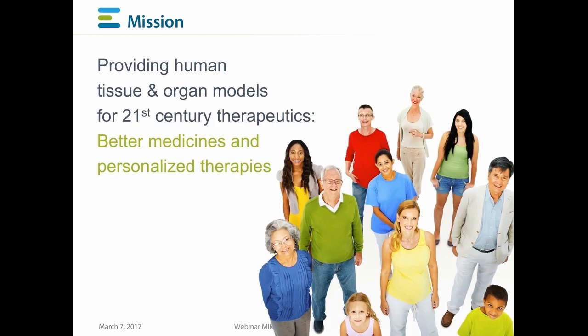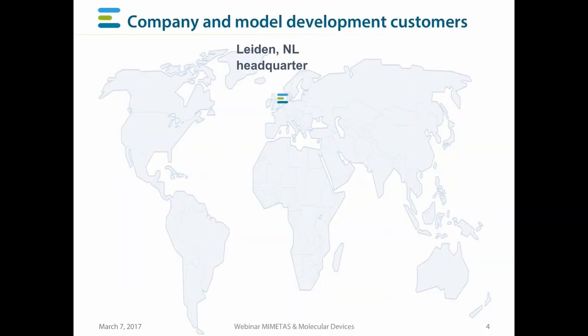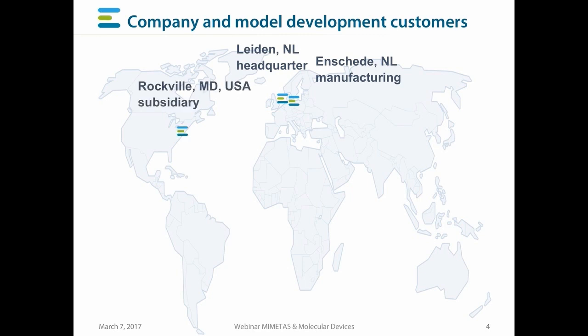Our mission is to provide human tissue and organ models for 21st century therapeutics. We want to help create better medicines and personalized therapies. Physiologically relevant tissue models are also crucial for improving our fundamental insight in tissue function and disease. The headquarters of Mimetis is based in Leiden, in the Netherlands, with a manufacturing site in Enschede. We have a subsidiary in Rockville, Maryland in the USA, and an agent in Tokyo, Japan.